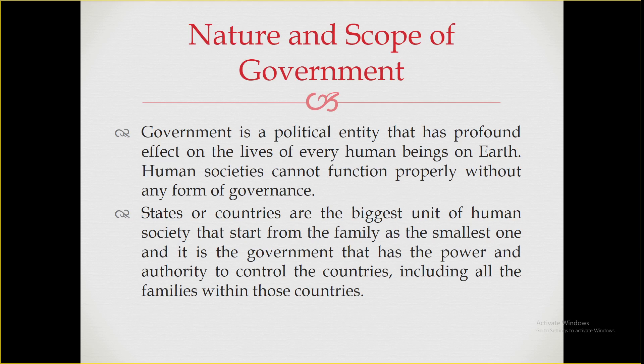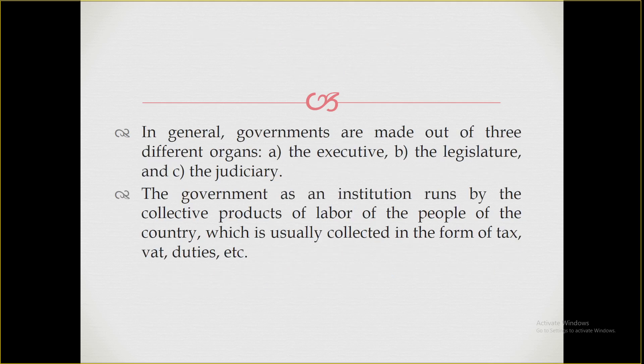Government has the power to control not only the macro aspects of human life but also the micro aspects — how you live, how you talk, how you think. In general, governments are made out of three main organs: number one is the executive or administrative part, number two is the legislature or parliament, and number three is the judiciary or the courts. When these three organs work in harmony, they create good governance and the state prospers.